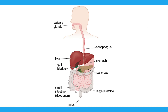So over here I've got an image of the organs which are involved in the digestive system. At the top, where the mouth is, we have the salivary glands. The long tube which goes down to the rest of our body is known as the esophagus. We have the liver, we have the gallbladder, we have the stomach, we have the pancreas, we have the small intestine which is inside and the large intestine which is outside, and we have the anus right at the bottom.